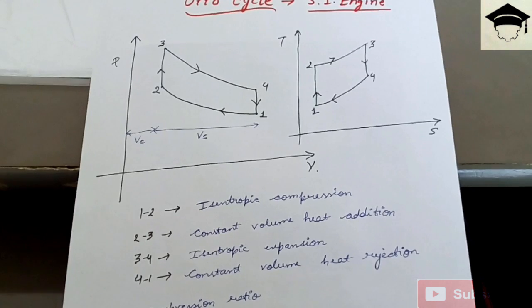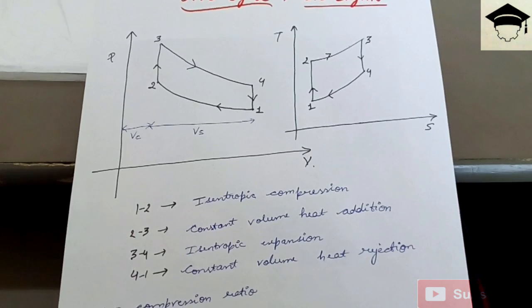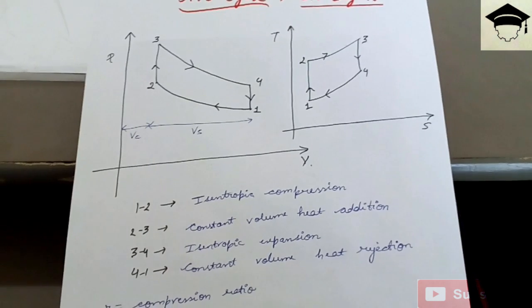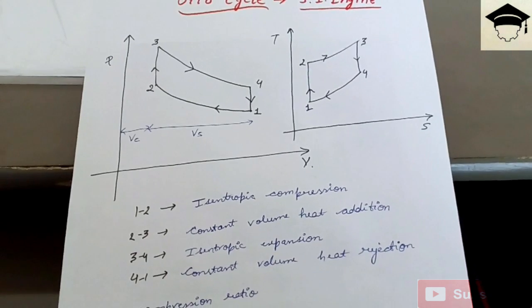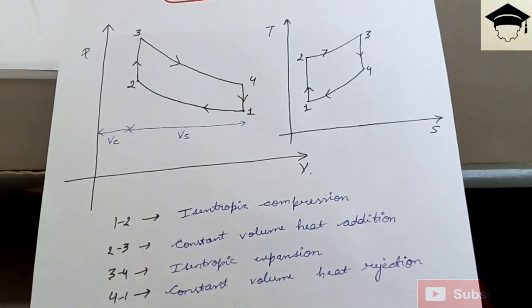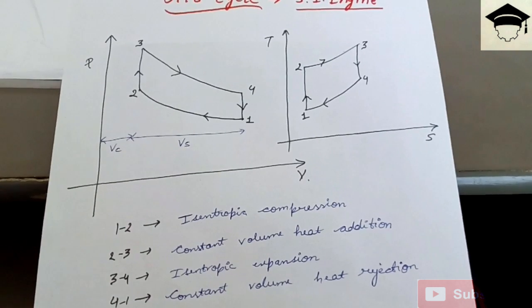The PV and TS, that is pressure-volume and temperature-entropy diagrams, will be like this. And VC as shown in the PV diagram, VC is the clearance volume and VS is the suction volume. So volume at point 1 will be VC plus VS.